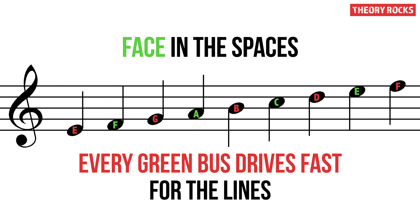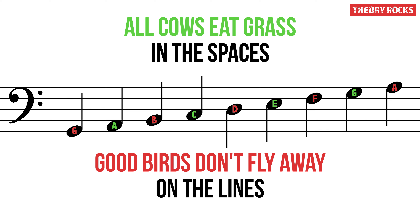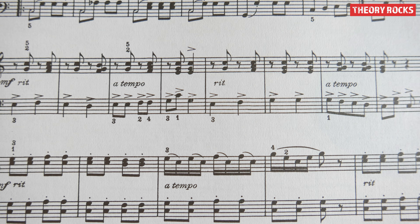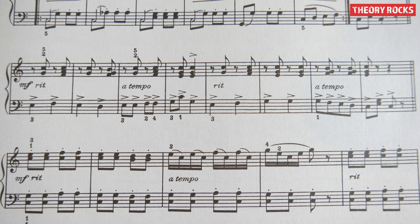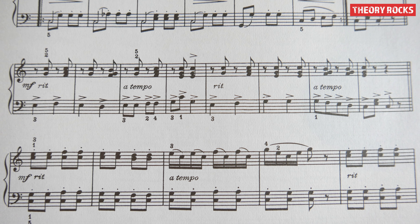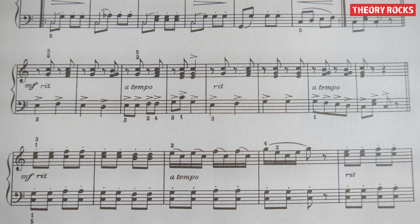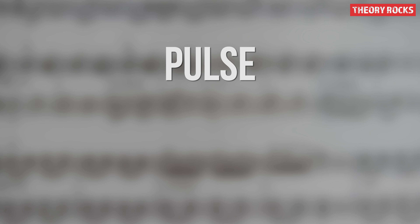In our previous lesson we looked at the stave for the first time and how where the notes are tells us what pitch to play. In this lesson we're going to take a closer look at the way these different notes appear. Their different shapes and styles actually tell us how long we should play the note. Before we start though we need to talk about pulse.